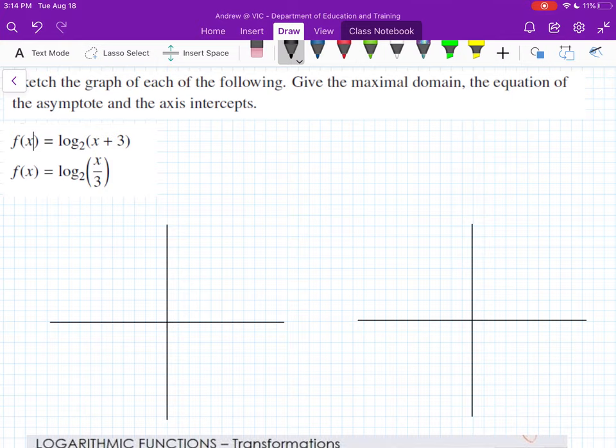The only really main transformation that has happened to this is that this plus 3, this is our x-asymptote moving left. Because remember it always goes in the opposite direction. So it goes to the left 3.